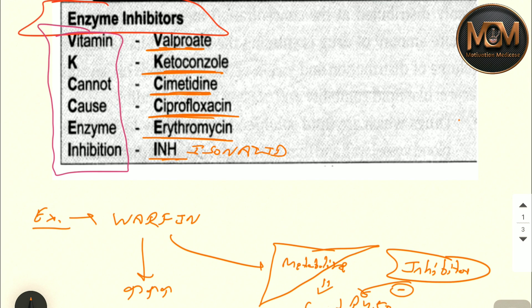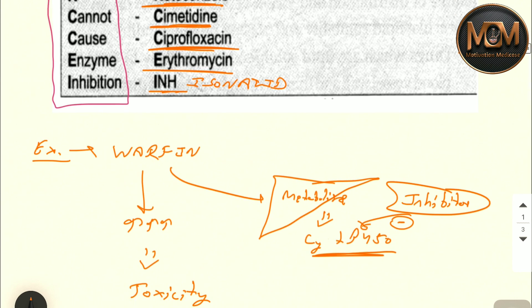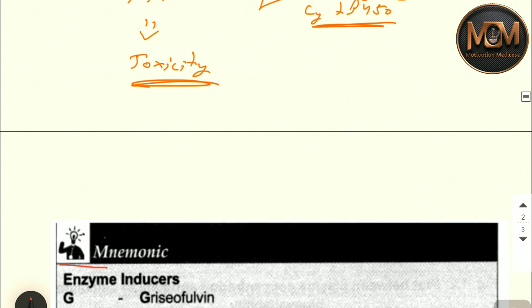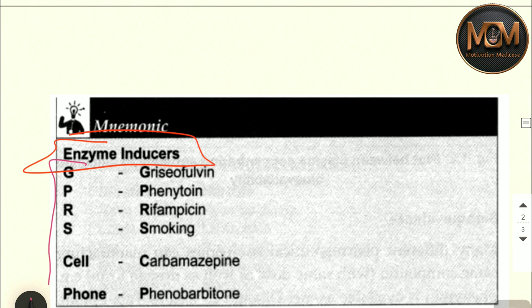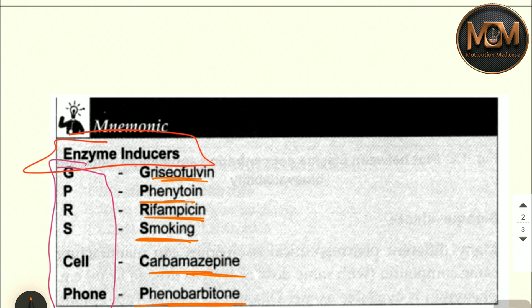Now let's talk about enzyme inducers. The mnemonic to remember these drugs is 'GPRS Cell Phone' — you know, there's GPRS in cell phones. From G it is Griseofulvin, from P it is Phenytoin, from R it is Rifampicin, from S it is Smoking, from C it is Carbamazepine, and from the second P it is Phenobarbitone. This is a very interesting and easy way to remember the enzyme inducers.